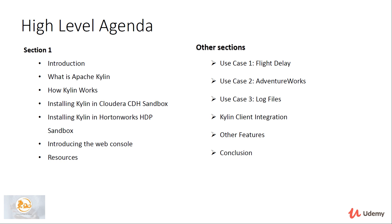Then we will move on to a section where we take sample clients and see how to connect ODBC and JDBC clients, and how to connect external applications using the Kylin RESTful API. Then we'll look at features like security, deployment modes, and how to use Apache Spark as the execution engine for Kylin. These are some of the cool features we're going to learn about Apache Kylin.